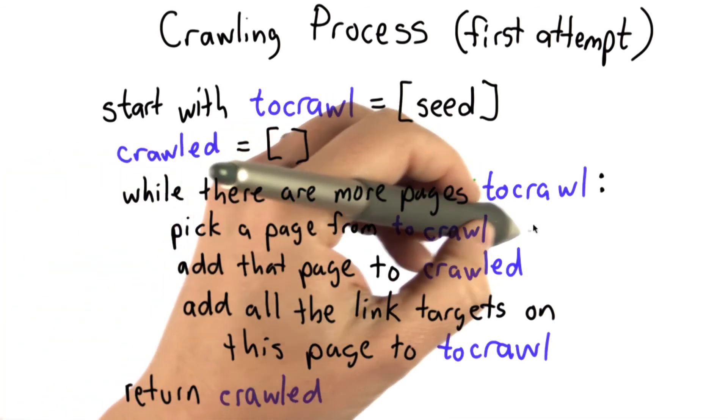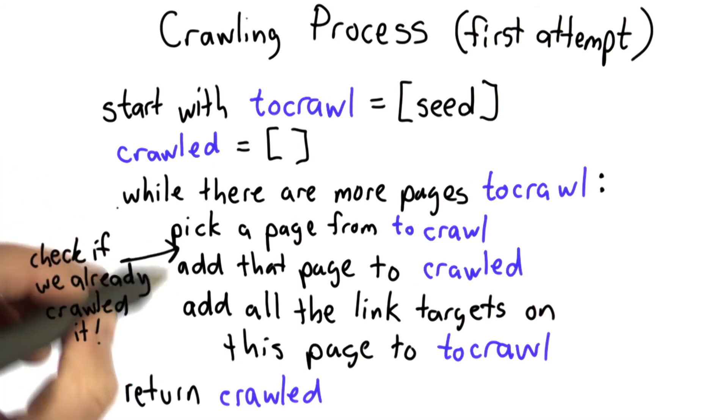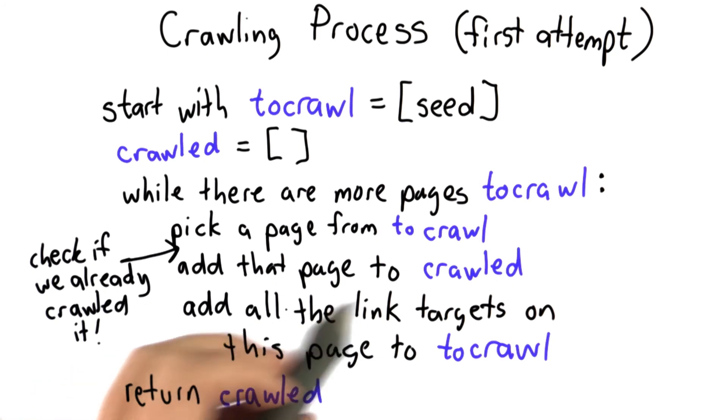So we're going to have to be a little more careful about this step. We need to add a test to see if we already crawled this page. If we did, we don't do anything. If we didn't already crawl it, then we need to add it to crawl, add all the links in that page to do crawling and keep going.